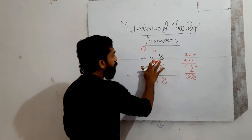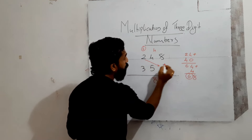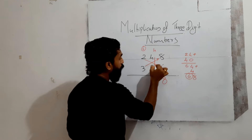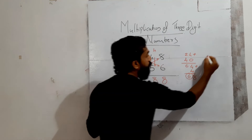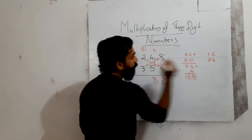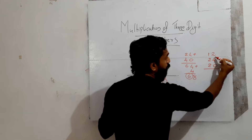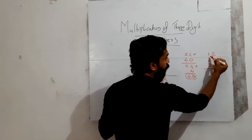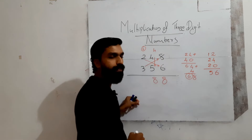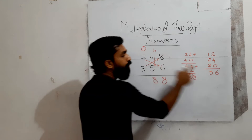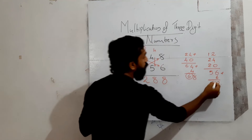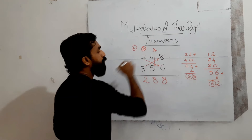Next cross multiplication with three terms: 2 into 6 is 12, 3 into 8 is 24, and 4 into 5 is 20. Add these three: 12 plus 24 plus 20 equals 56. Add the carry of 6: 56 plus 6 equals 62. Write 2 here, carry over 6.